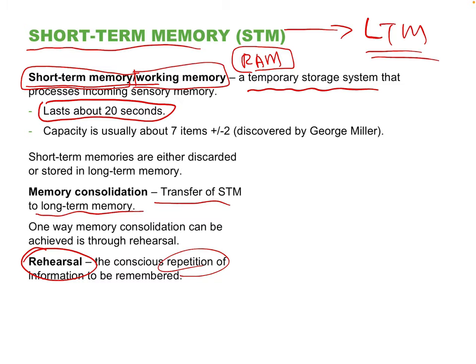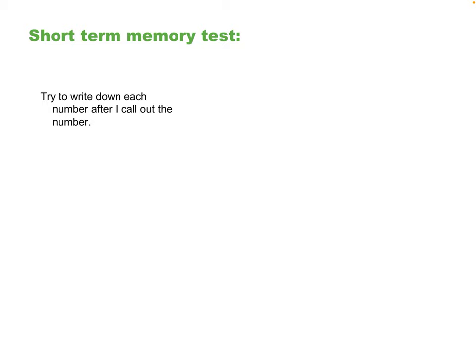I'm going to demonstrate this with a short-term memory test. I'll call out a series of numbers — starting with four digits and going up to about nine. Write down each number only after I call out the last digit. The first number is four digits long. Don't start writing until I say the last digit. Two, one, five, six — okay, write it down. Pretty easy, right? Unless someone was yelling at you from another room and interfered with your attention, you probably got that.